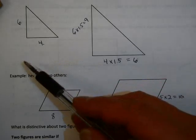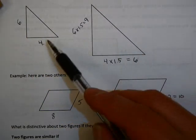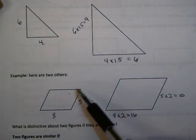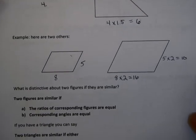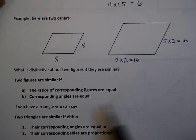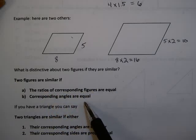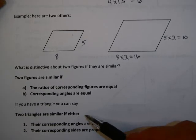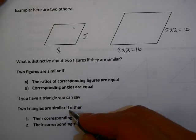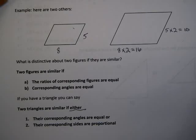So this scale factor is important. The other thing to notice is that this angle and this angle need to be the same. So in fact, all of them. It would be impossible for any of these angles to change if you have similar figures. Two figures are similar if the ratios of the corresponding parts of the figures are equal, and if the corresponding angles are equal. If you have a triangle, then you could say two triangles are similar if either their corresponding angles are equal, or their corresponding sides are proportional.